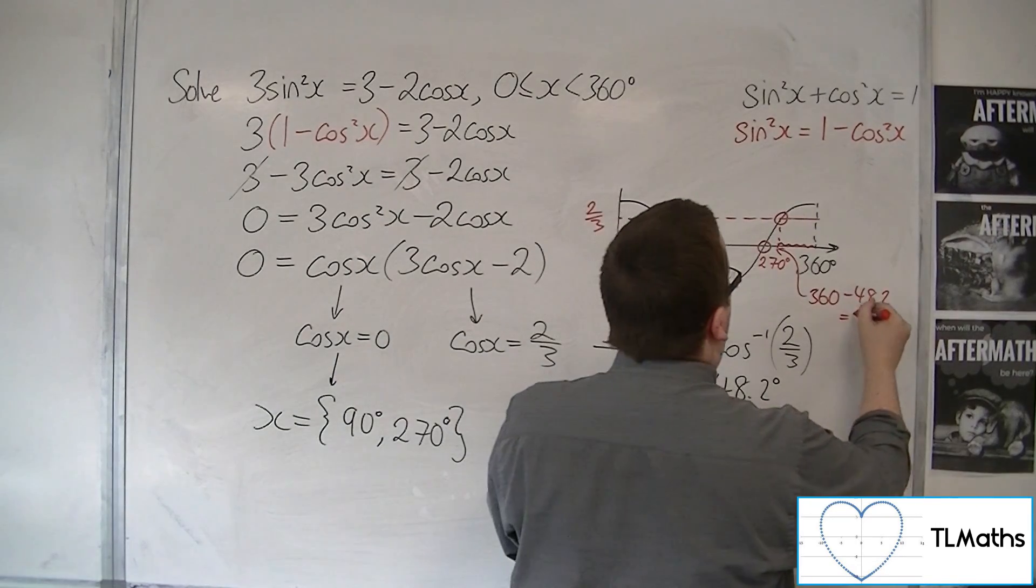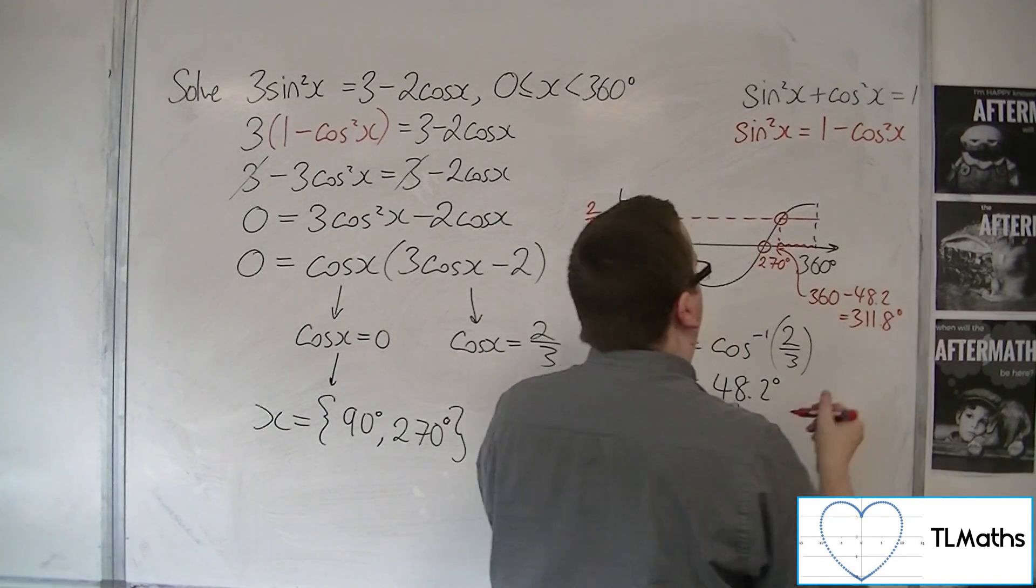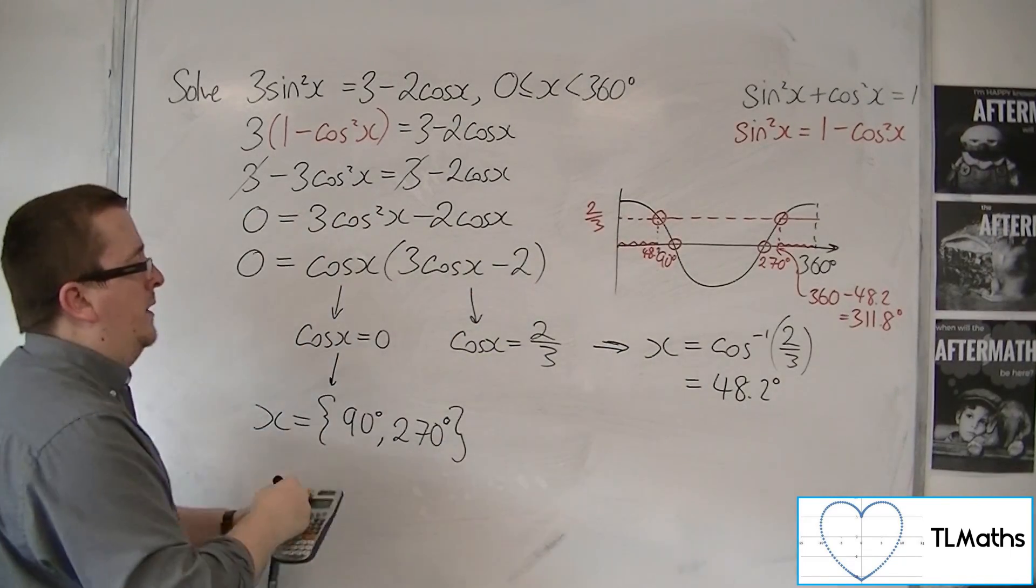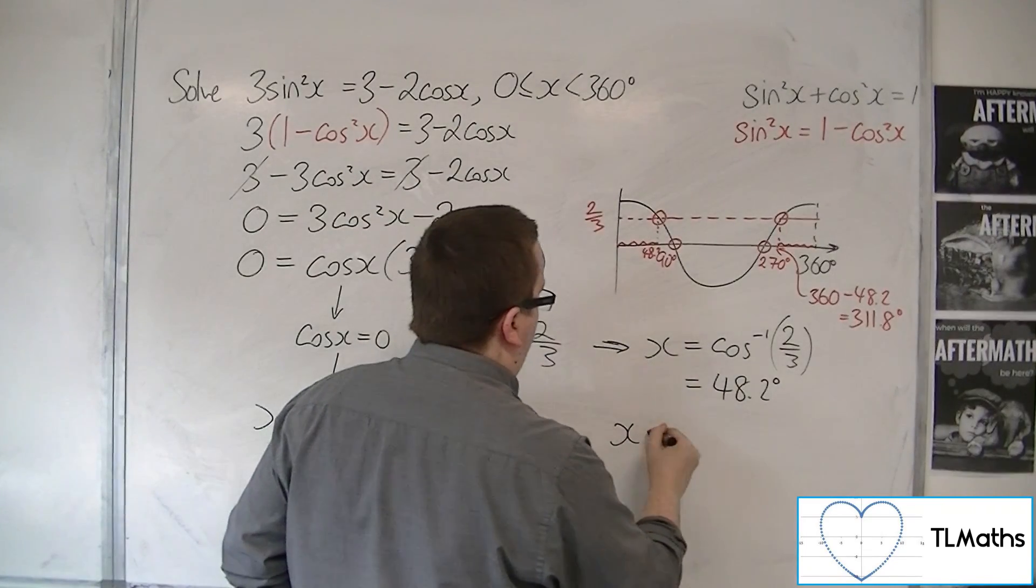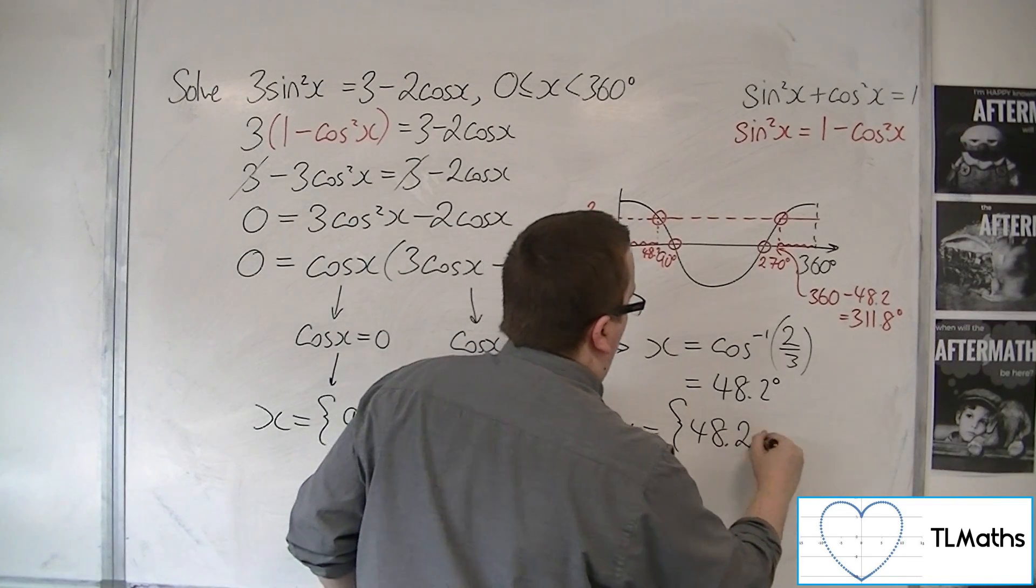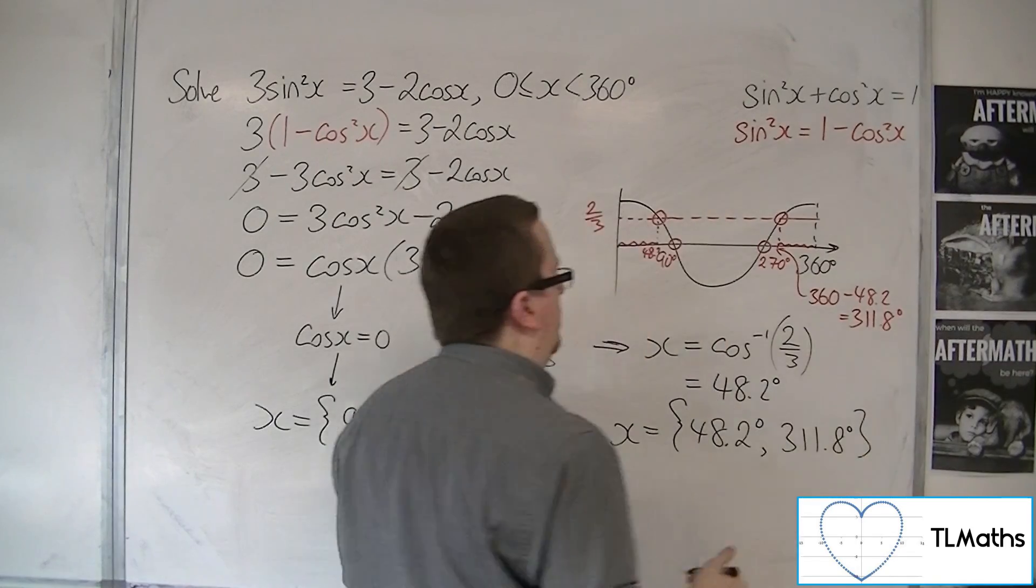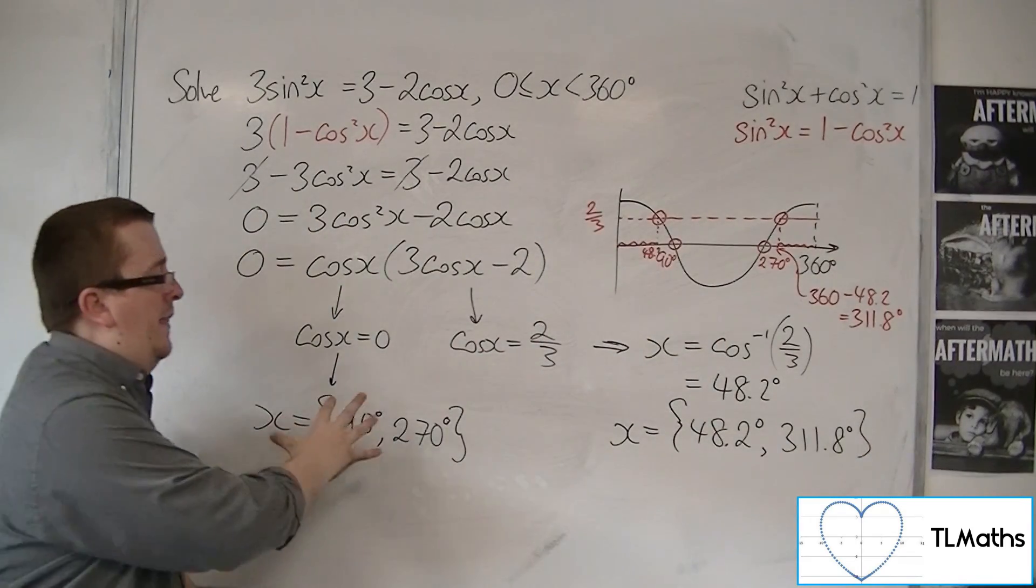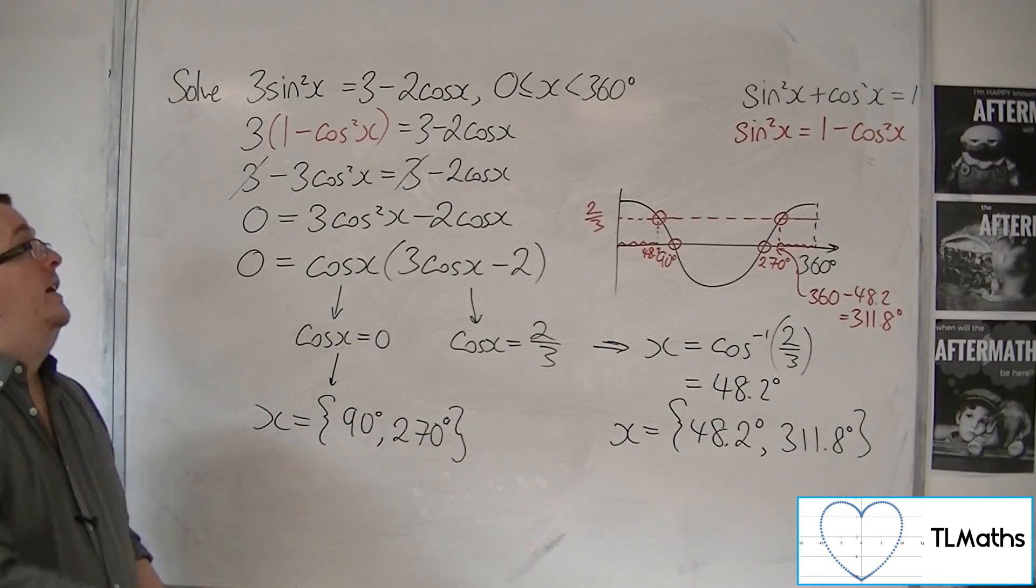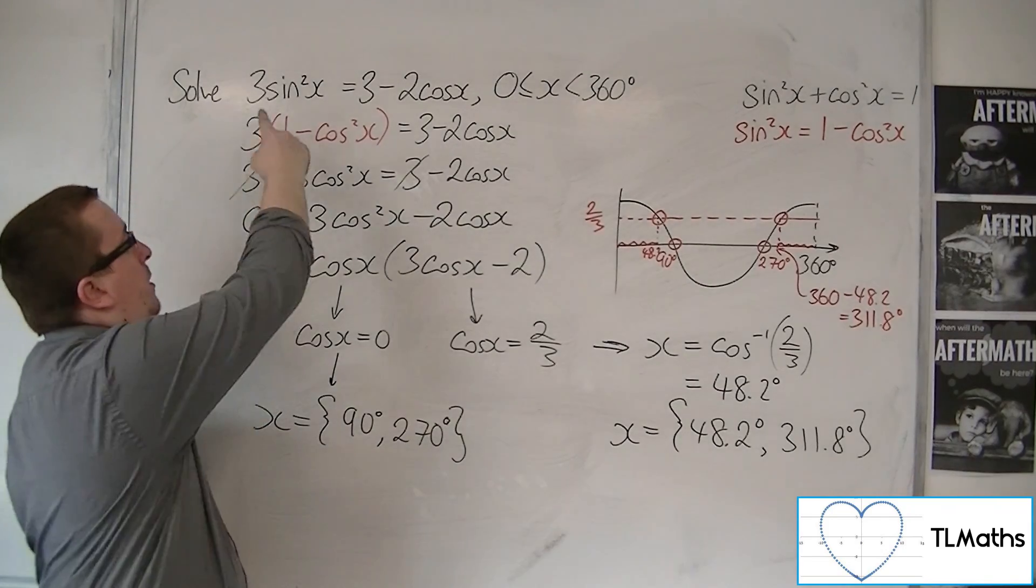And that gets me 311.8 degrees to one decimal place. So the two solutions that I'm getting from this equation are 48.2 and 311.8 degrees to one decimal place. And they are the four solutions to the original problem that I had.